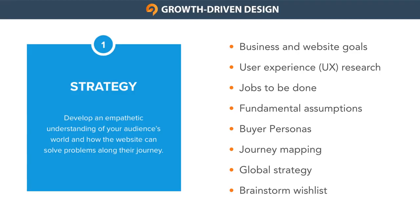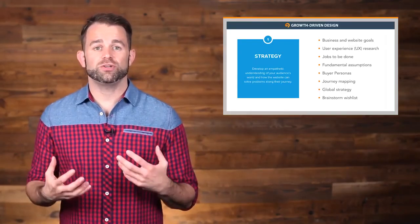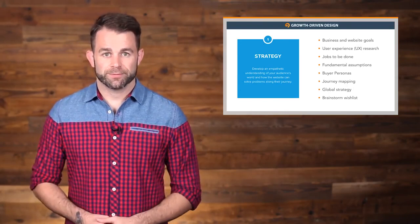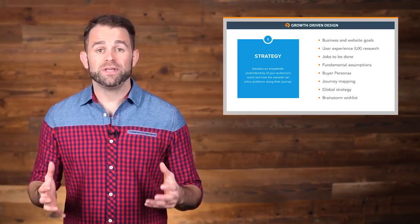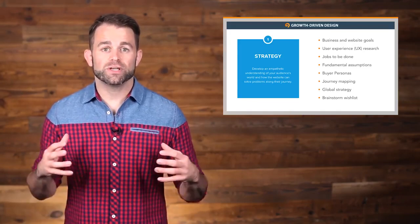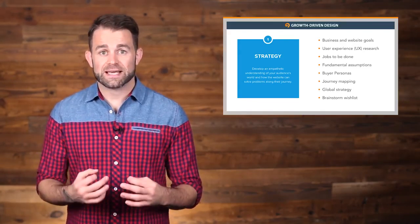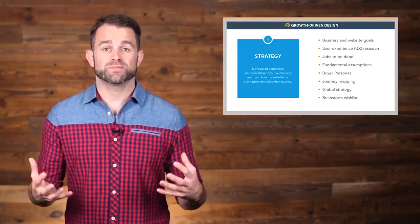The next step in the strategy stage is to develop personas using a deep understanding of the audience that you've gained through the previous steps. A persona is a fictional representation of your ideal customer. Then you'll need to do journey mapping, where you map out that persona's journey and everything that happens before, during, and after they interact with your business. By mapping your persona's journey, you'll have a direction of how you can weave the website into that journey and solve problems along the way.